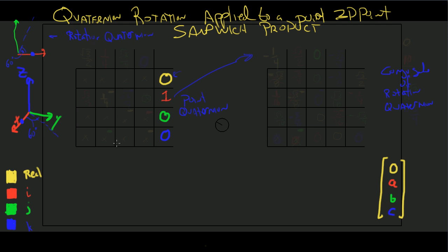As you get into this, what we're looking at assumes a right-hand coordinate system. That becomes important as we start multiplying component vectors in the i, j, or k direction. The rotation quaternion q_r is defined as: the cosine of the rotation angle divided by 2 in the real portion, and then in the imaginary portion, the sine of alpha divided by 2 times the axis vector.